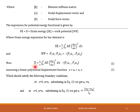Thus, the total potential energy expression is given as the sum of strain energy plus work potential. Now, let us assume a linear polynomial displacement function, because it is a linear bar element, so the displacement model assumed will be a linear polynomial. That is, u = A0 + A1·x.